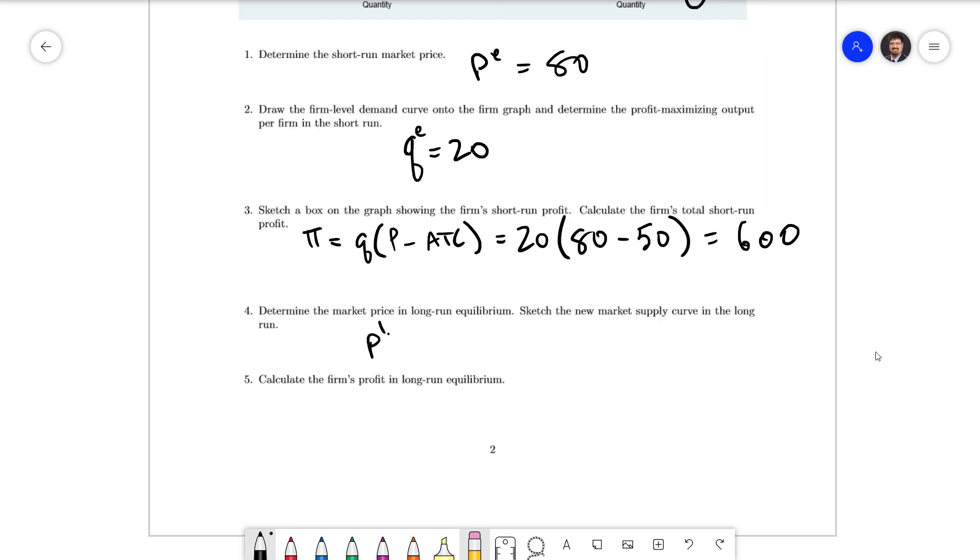So we're going to write that the price in the long run is 40 and we sketched in our new market supply curve. The final question is to calculate the firm's profit in long run equilibrium.